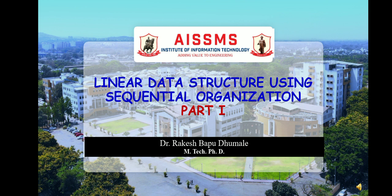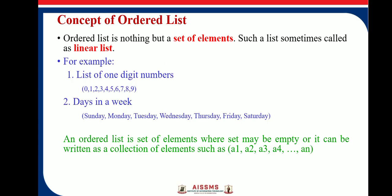In this video we will discuss linear data structures using sequential organization. We will consider the concept of an ordered list. An ordered list is nothing but a set of elements; such a list is sometimes called a linear list. Here are two examples: a list of one-digit numbers, 0 to 9, which is one set of elements called an ordered list.